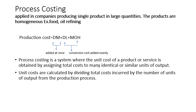In Process Costing, my production costs are going to be subdivided into categories. Direct material is in one package because I'm going to add it all at once. Whereas direct labour and manufacturing overhead costs are merged together in one package under the name of conversion costs, because I'm going to add them evenly.